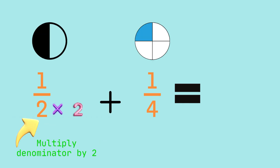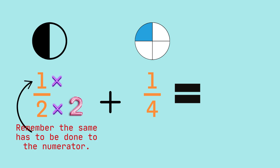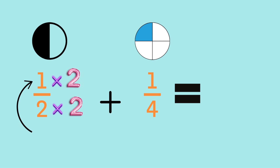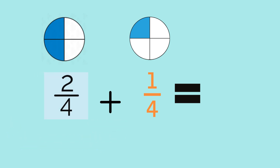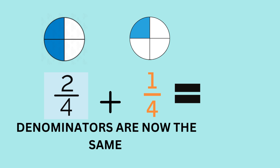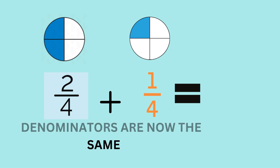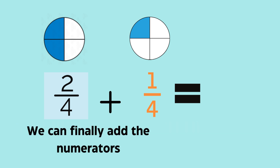We can do this by multiplying the denominator by two. Now remember our lesson on equivalent fractions — whatever we multiply to the denominator, the same has to be done to the numerator to keep the fraction equivalent. Therefore, we also need to multiply the numerator by two. So, one-half is now rewritten as two-quarters. Now that both denominators are the same, we can finally add the numerators to get our answer.